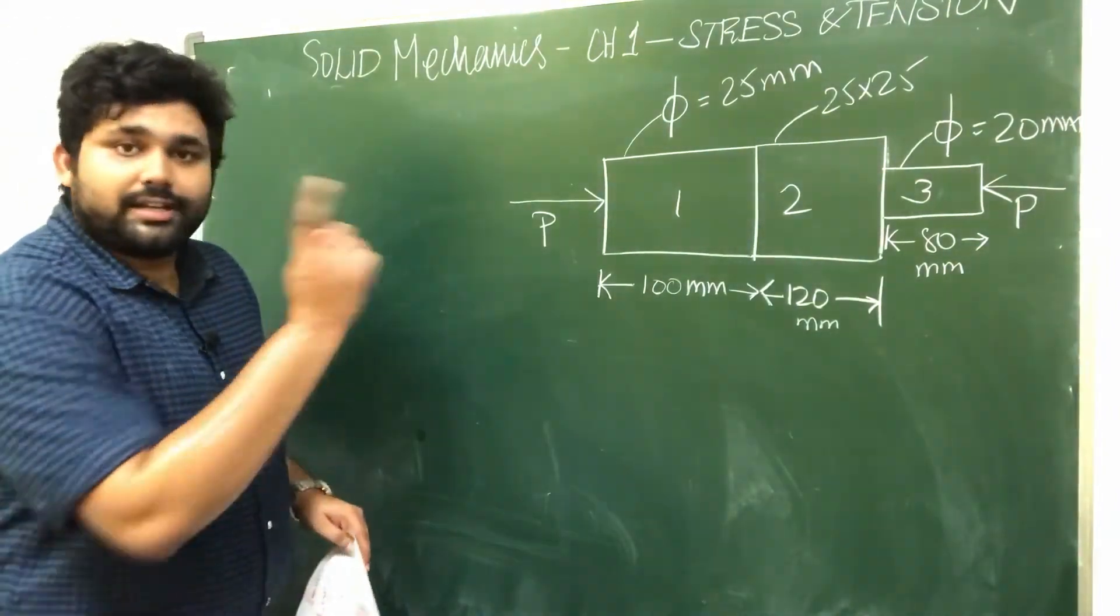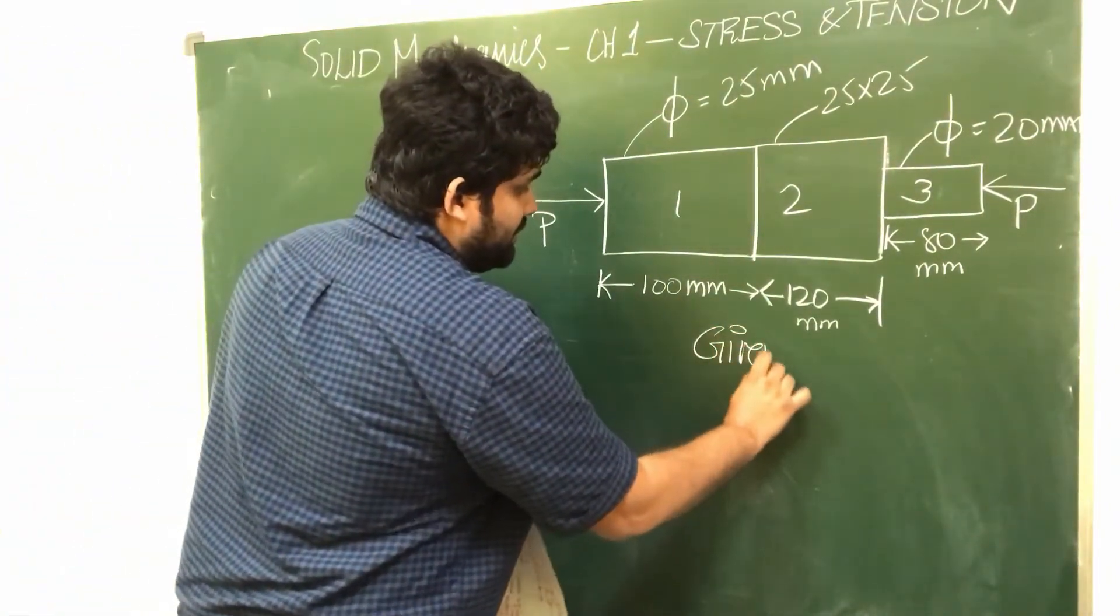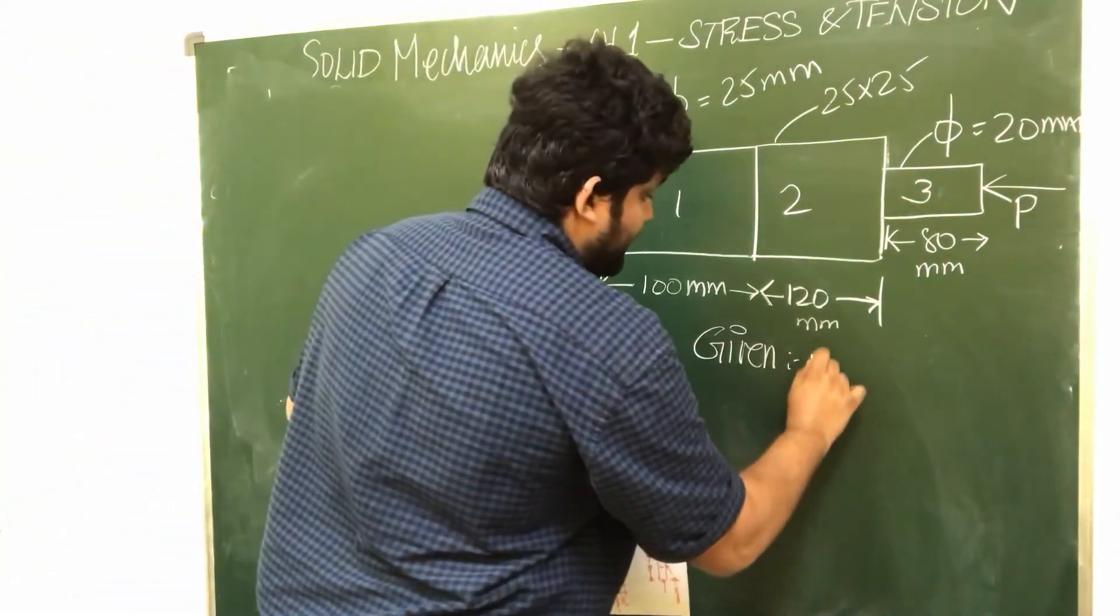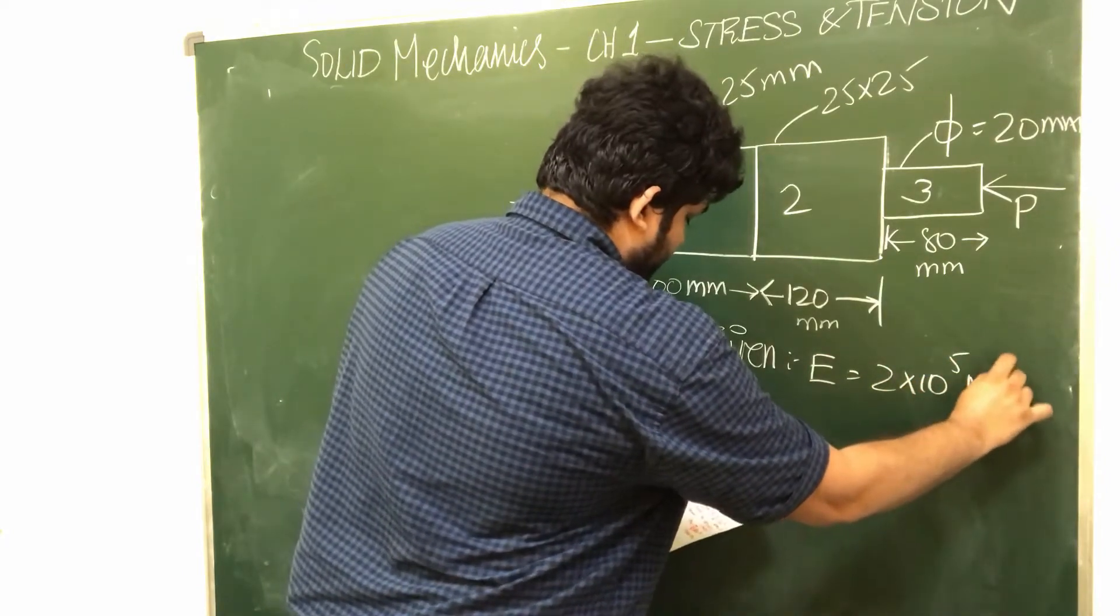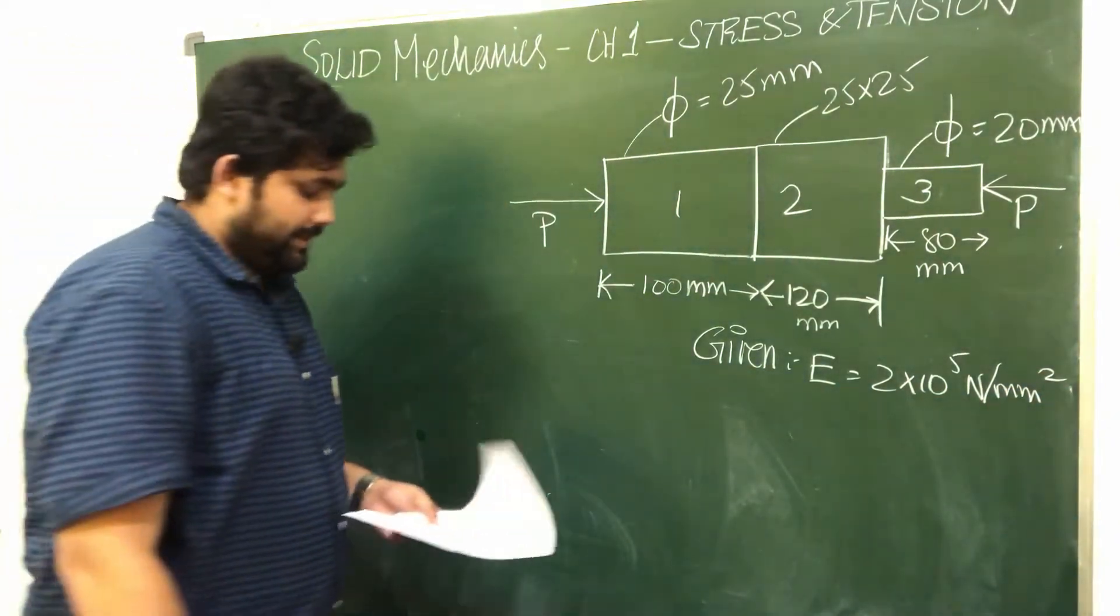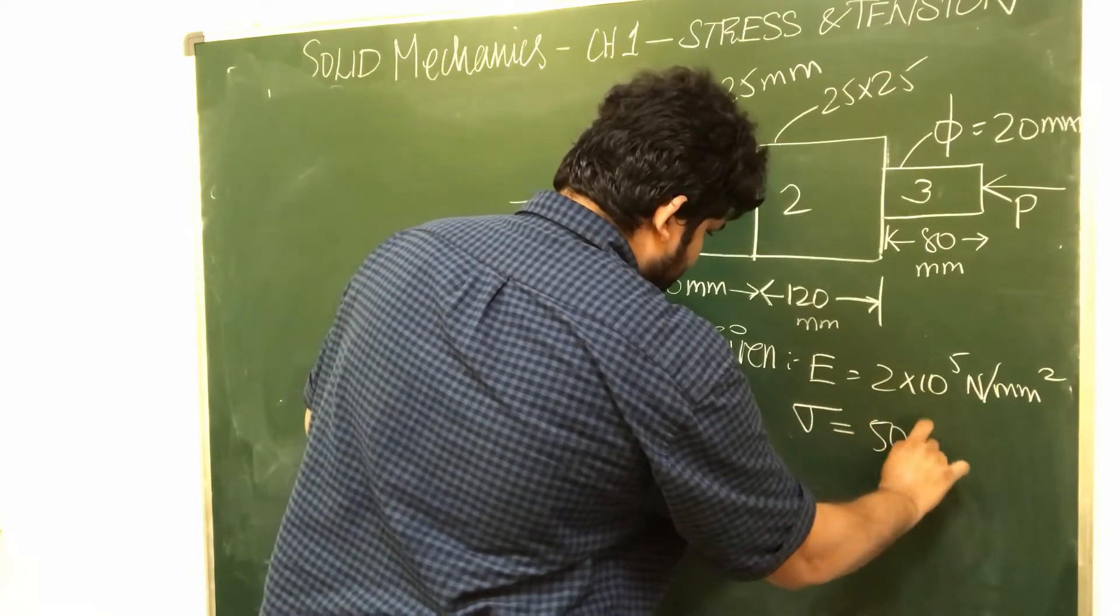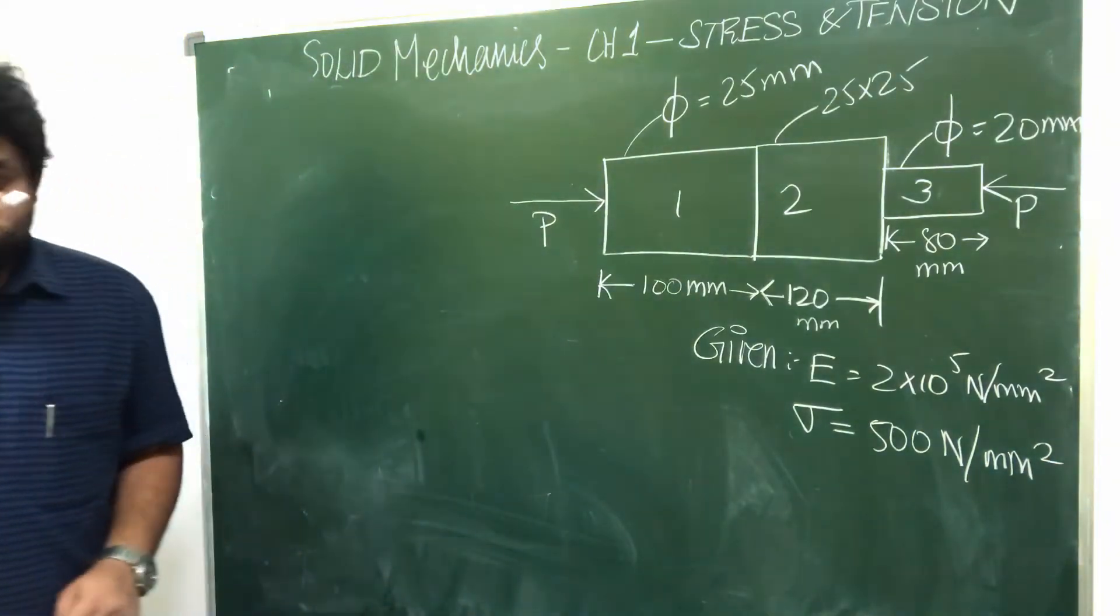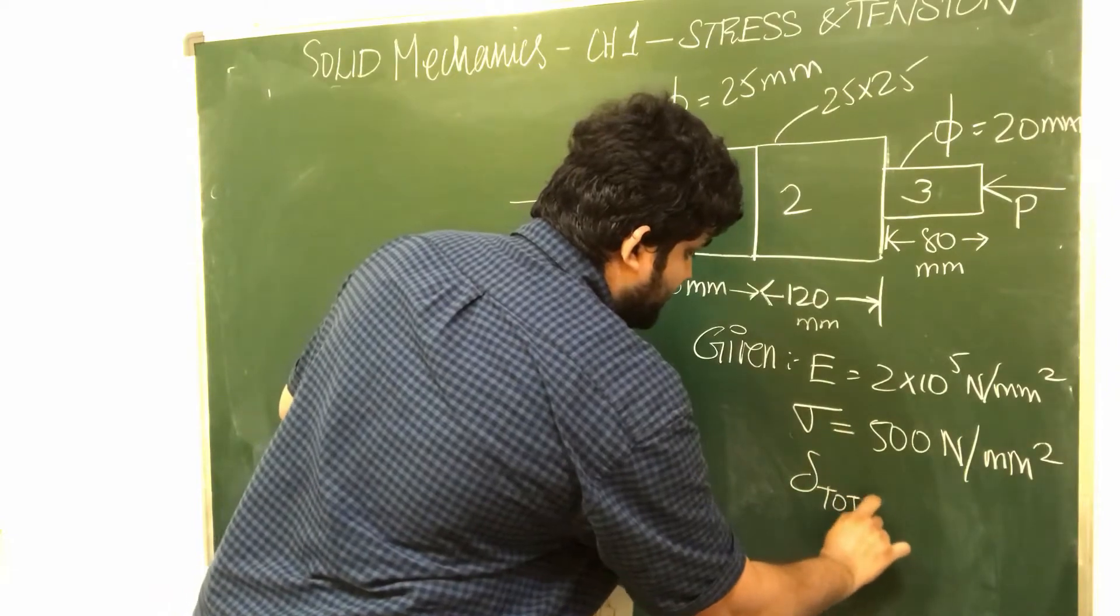So here is the diagram. The given values: modulus of elasticity E is 2x10^5 N/mm^2, the stress is 500 N/mm^2. As usual, we need to find total deflection and elongation.